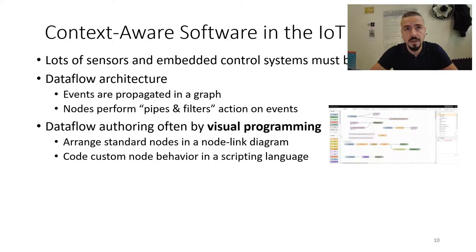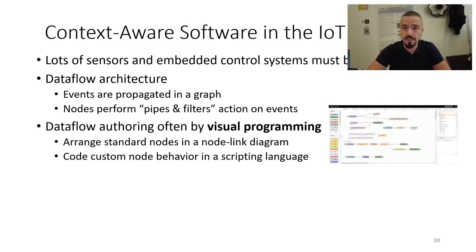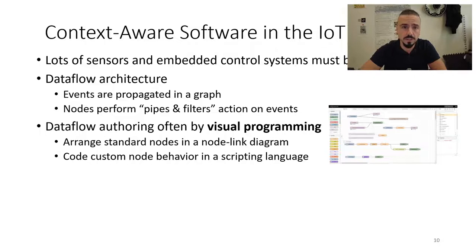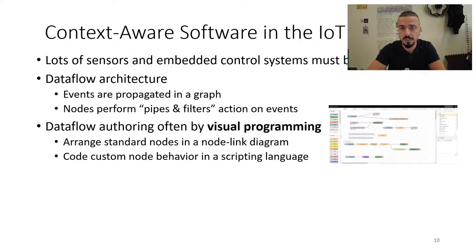Looking at how we can make it context-aware: coming from the IoT world, software like Node-RED is used to orchestrate and pipe data from sensors to other sources. The concept is data flow authoring, like visual programming, which comes from design patterns like pipes and filters.